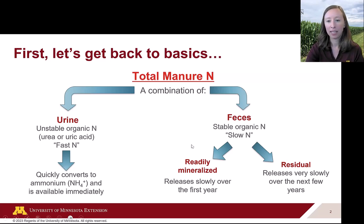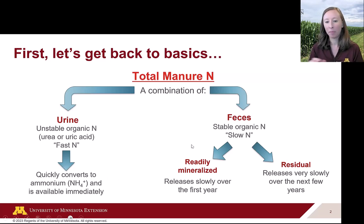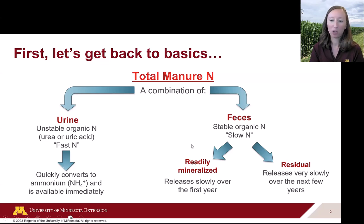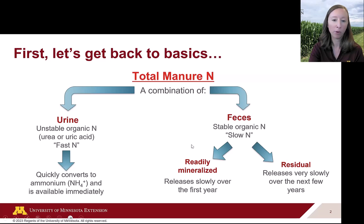In feces we have what's considered more of our slow nitrogen, released over a period of time. Some is readily mineralized into ammonium; some takes longer — the readily mineralized stuff releases over the first year, while more residual material might take two to three years. So we have two components: organic nitrogen and inorganic nitrogen, which is typically in the ammonium form.